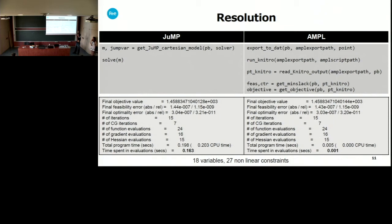This is done with AMPL working from our exported file, still using Artelys Knitro. It's essentially just the same two lines of commands. Then we fetch the Knitro solution point and call two utility functions to get the minimal slack of our problem at the solution point and the objective value. There is a difference in execution time between JuMP and AMPL, which I think is related to auto-differentiation. The ratio is a little better when we get to higher instances with 5,000 variables and 8,000 constraints. We'll be happy to test it again with the new JuMP version and MathOpt interface.